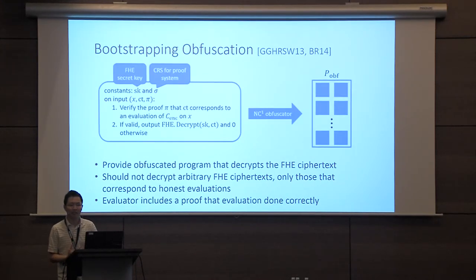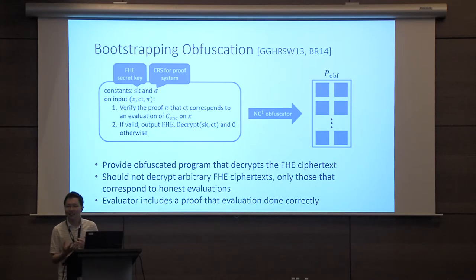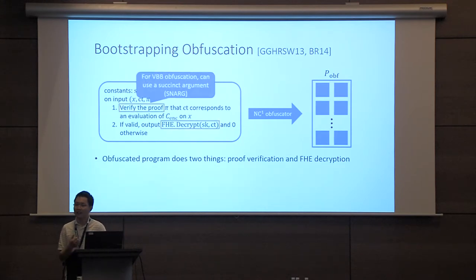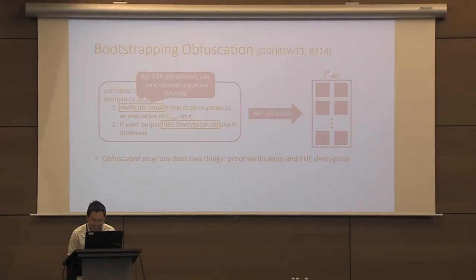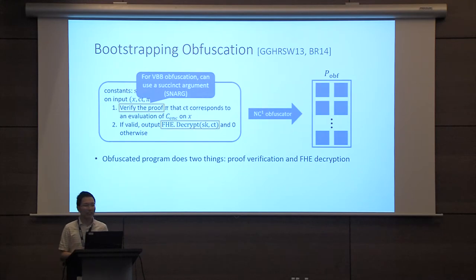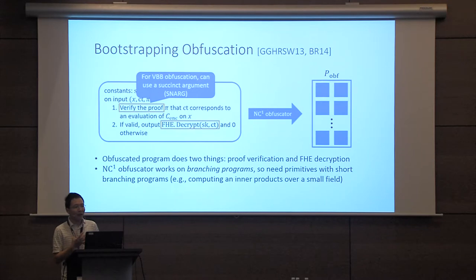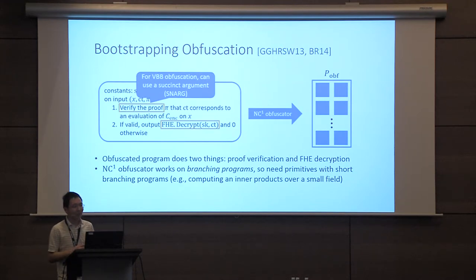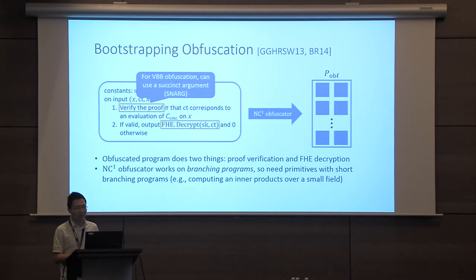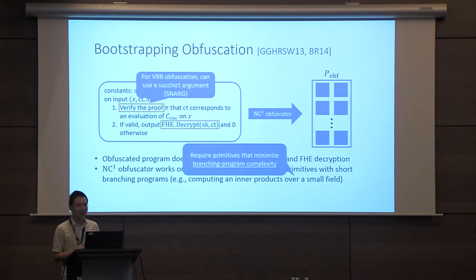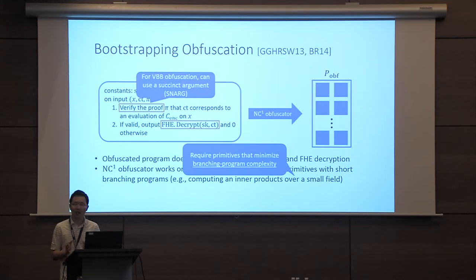Concretely, the program we need to obfuscate will contain, embedded inside it, a decryption key for the underlying FHE scheme, and maybe a CRS or some other verification state used for the proof verification process. The functionality needs to do two things: verify a proof, and then decrypt the resulting ciphertext. Since existing obfuscation constructions operate over branching programs, we want something that can be easily implemented by a branching program. We need FHE decryption and proof verification to be implementable by simple and short branching programs.